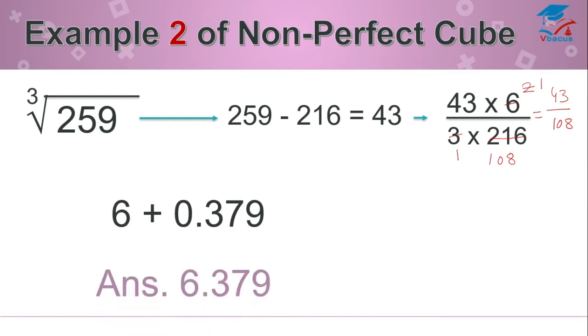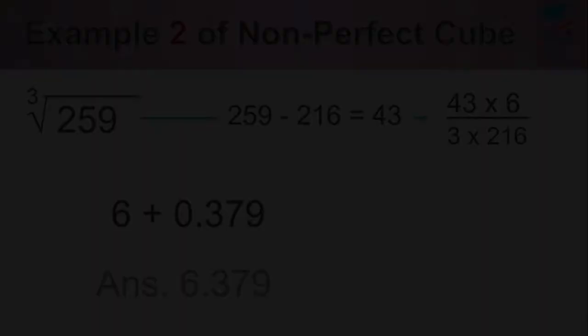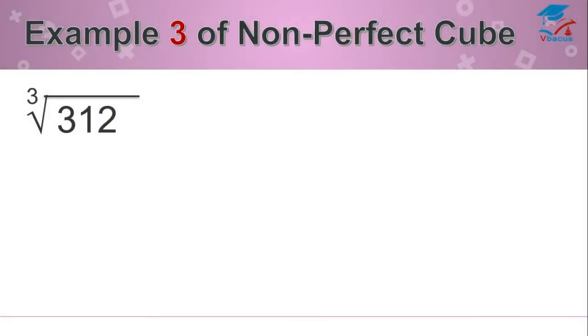So your answer will become 6.379. Let us take another example: 312. Since 312 is more closer to 343, I think that is cube of 7.